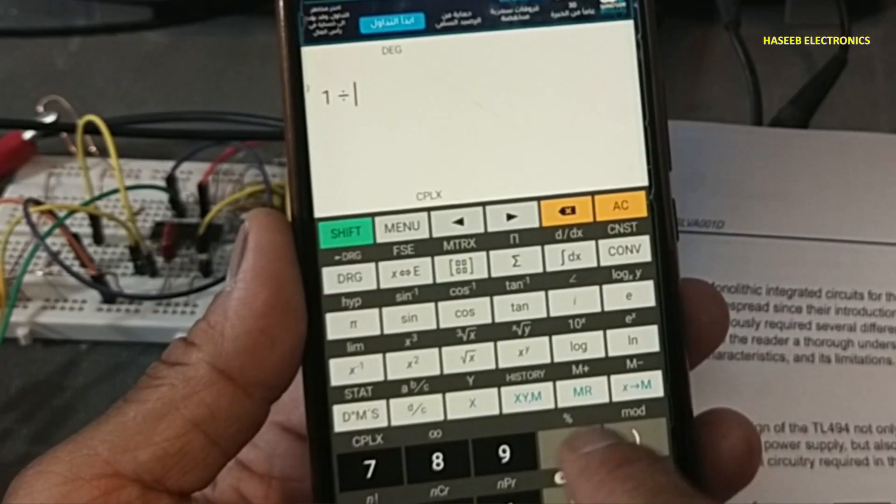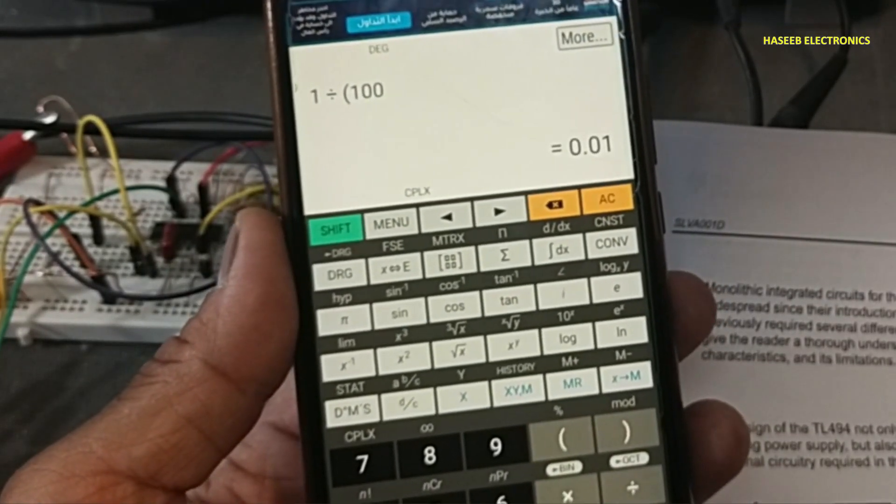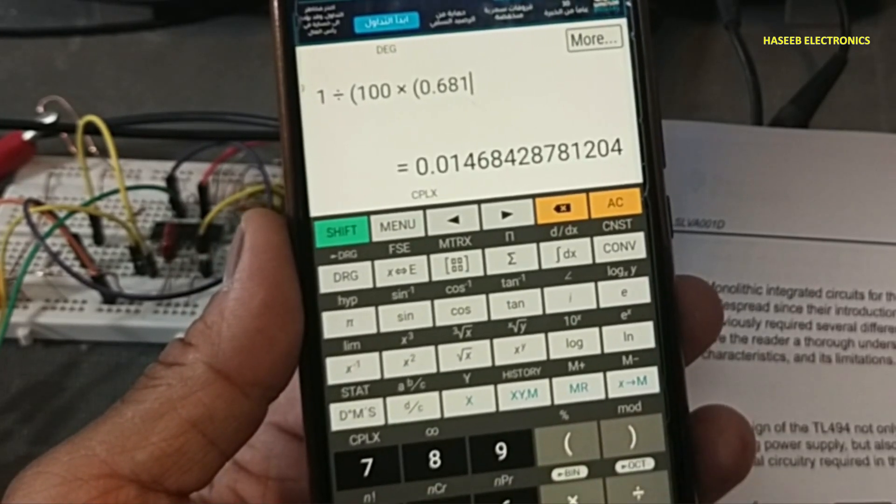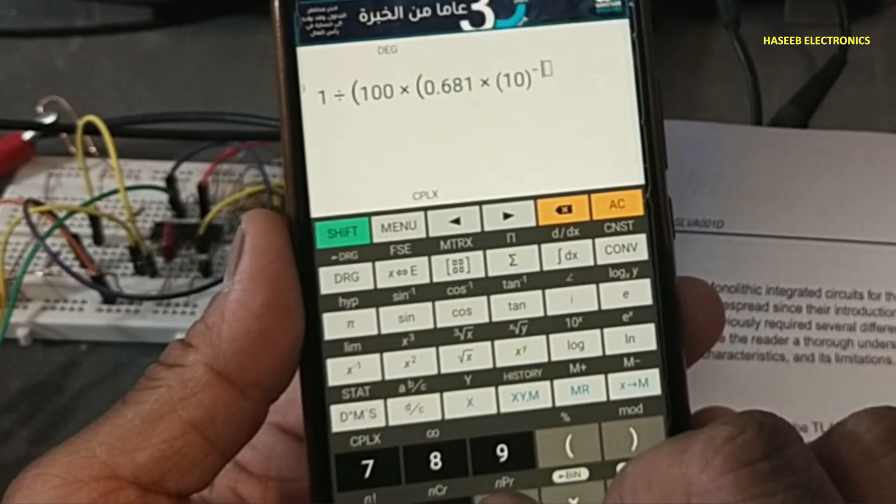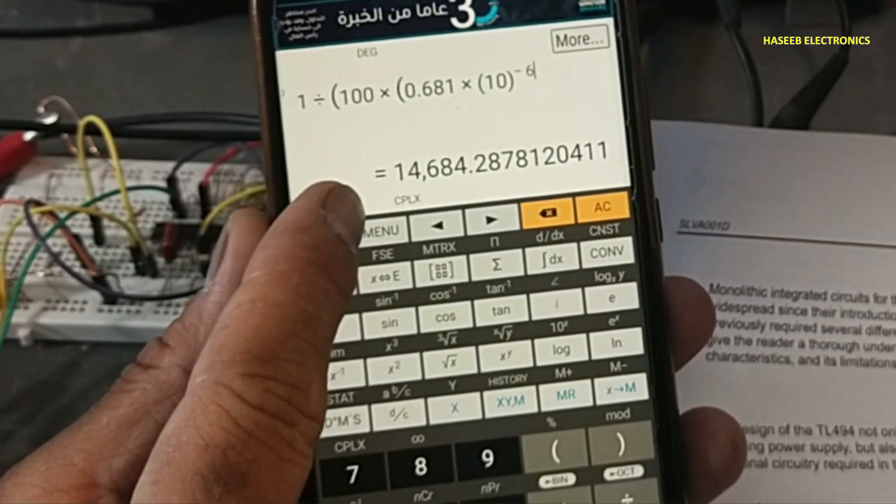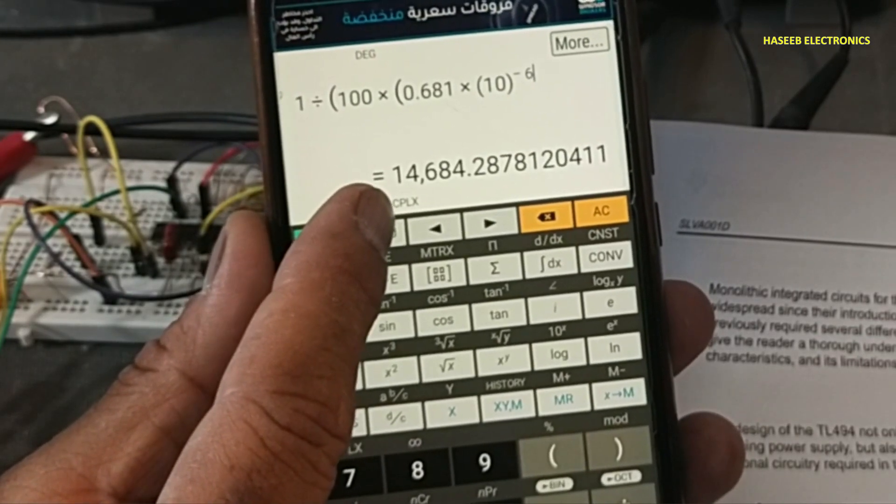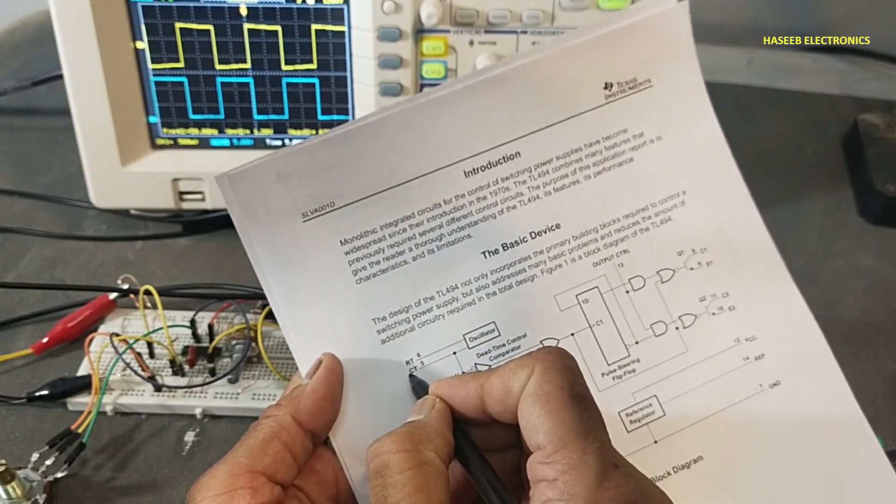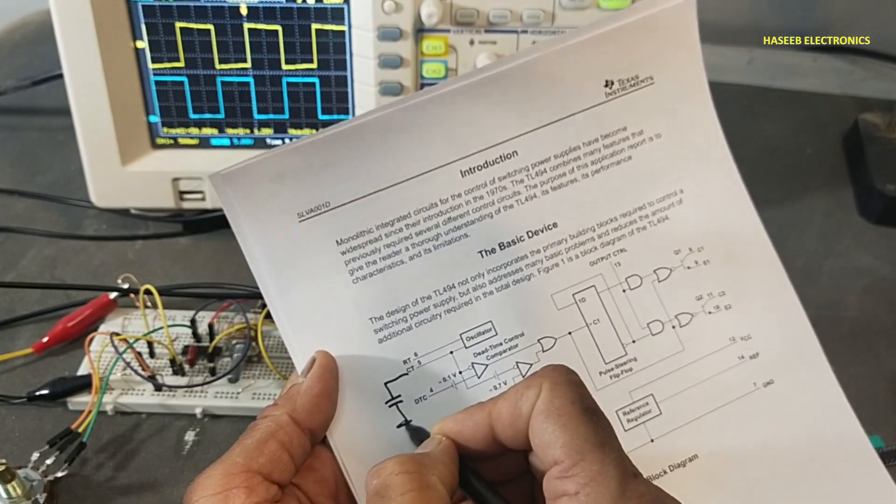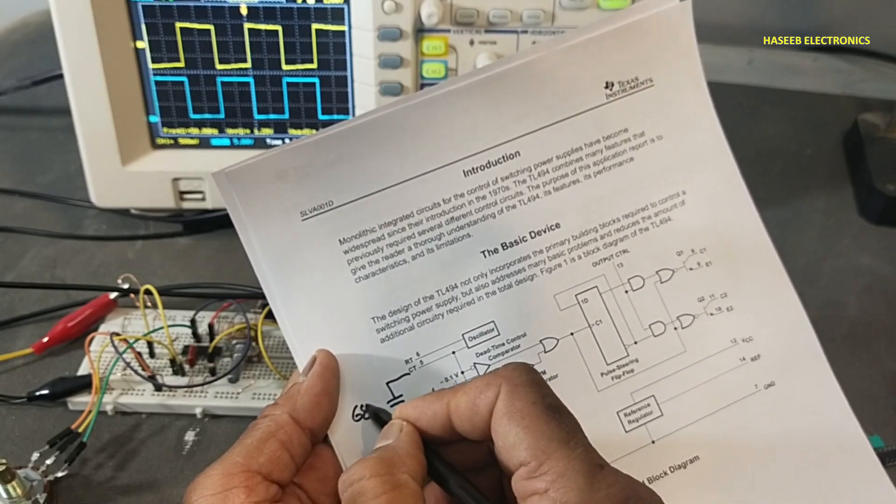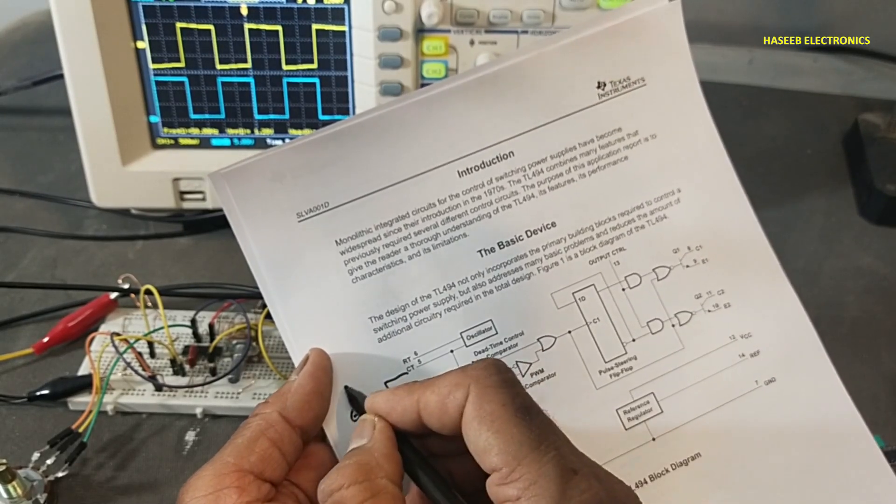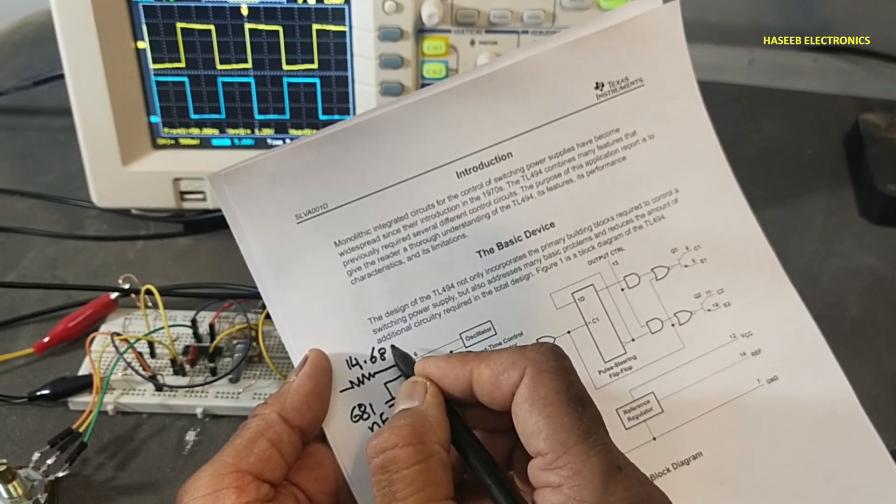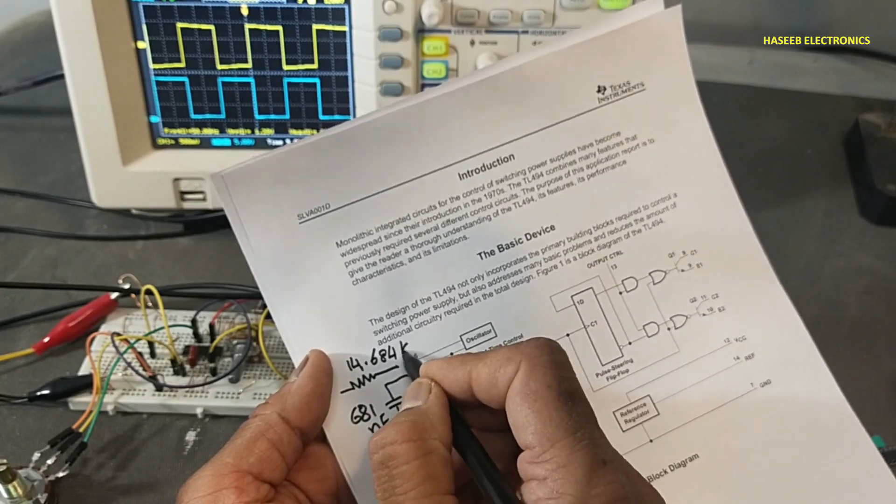1 divided by 100 hertz, multiply by 0.681 microfarad, 10 raised to power minus 6. The resistor value will be around 14.684 ohms. If we will use 681 nanofarad capacitor, the resistor value will be 14.684 kilo ohm.